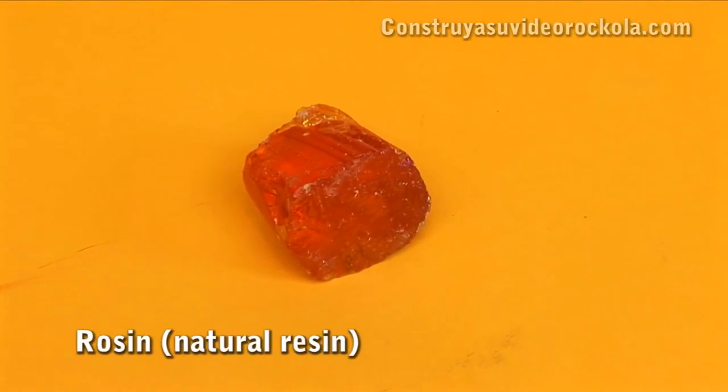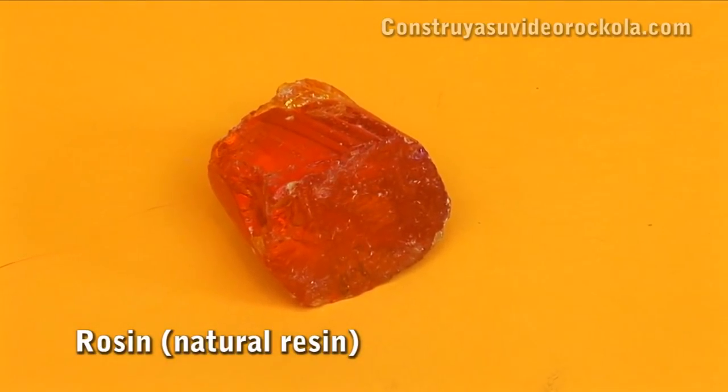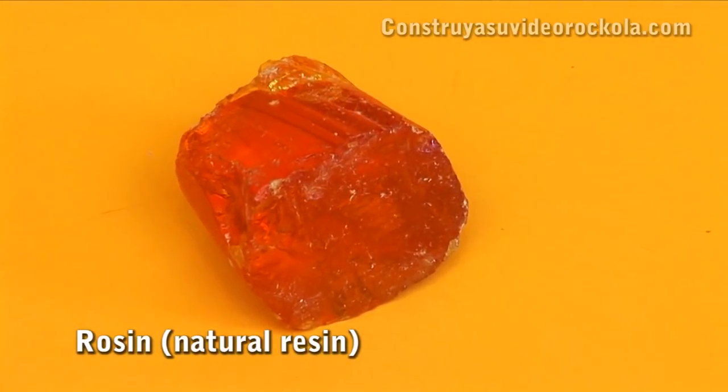Rosin - natural resin that when mixed with paint thinner, you get a solution to protect the board from rust.